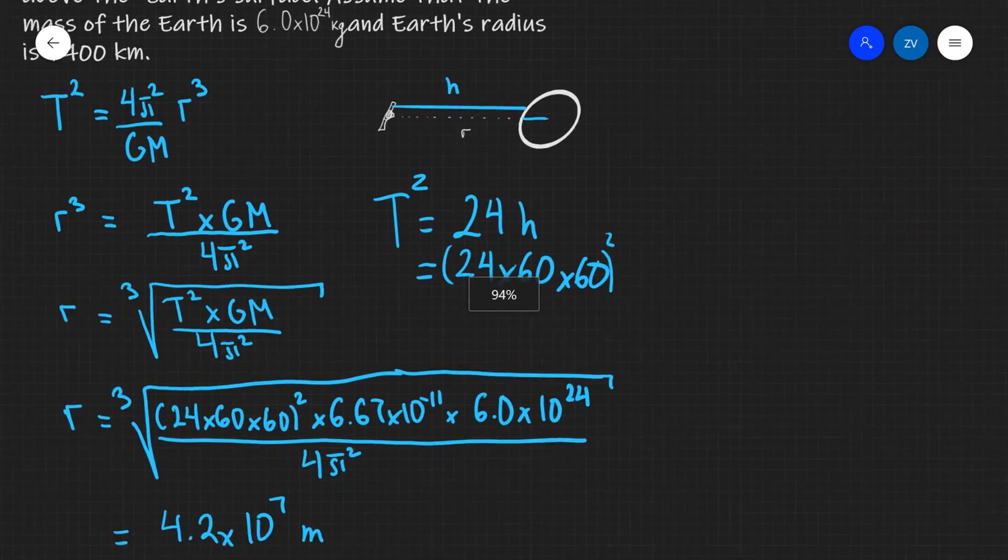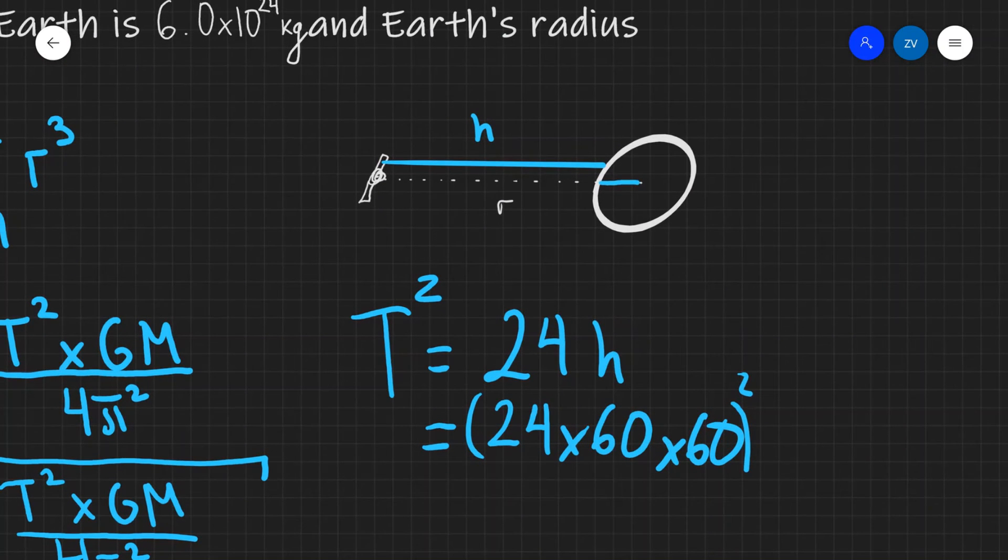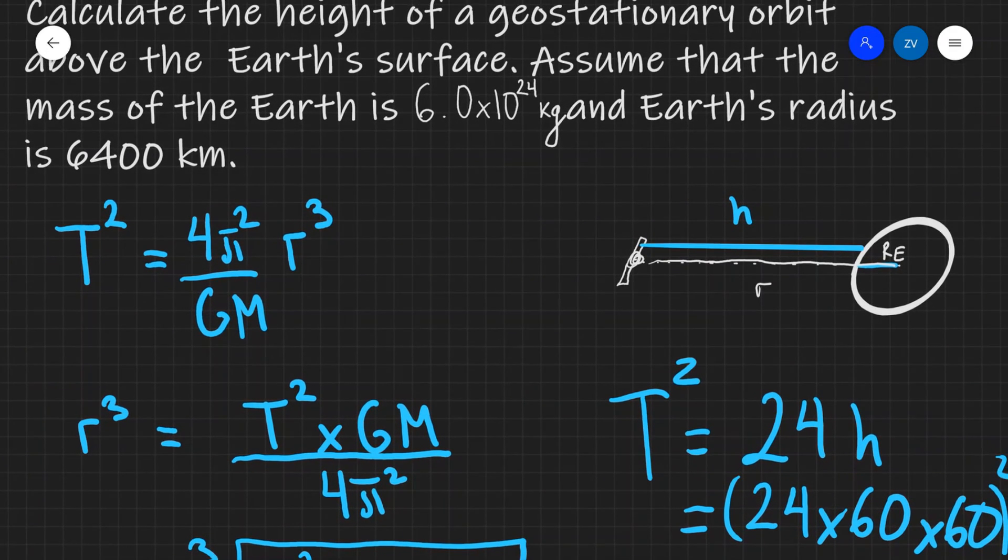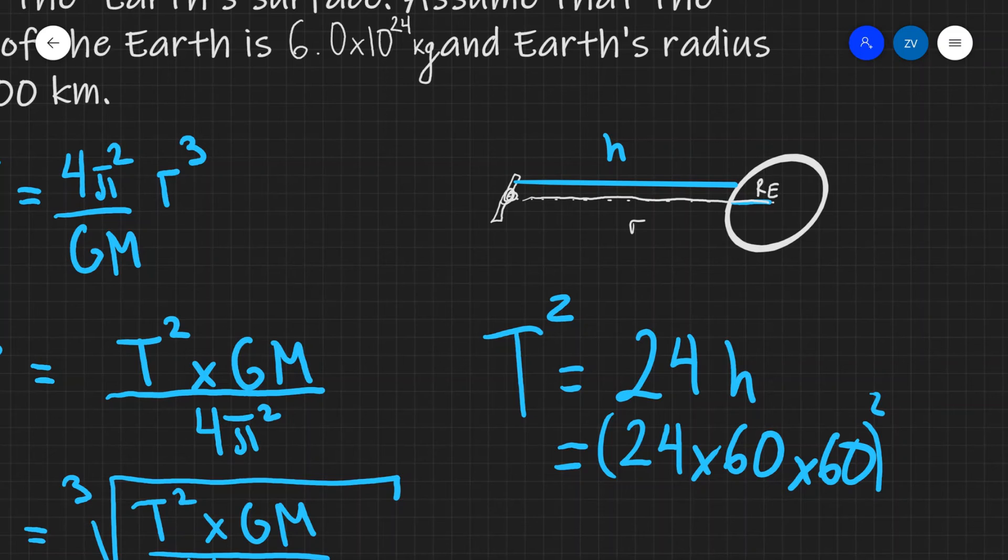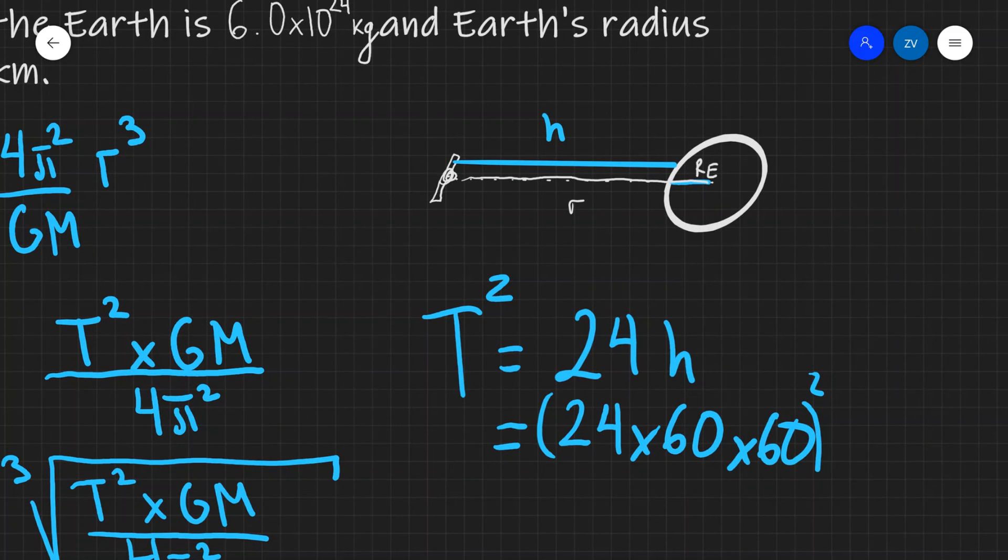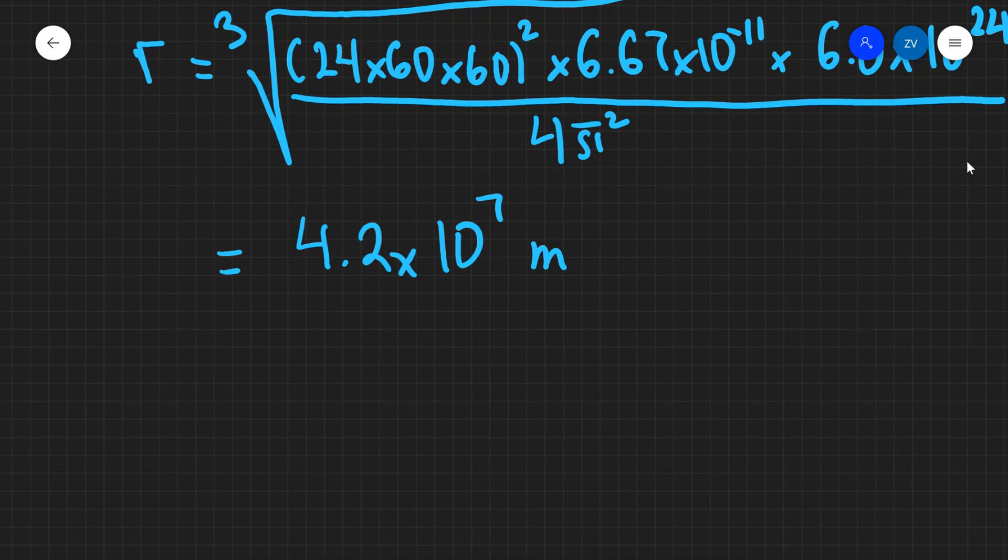Now this over here is our distance r. However, remember our height h is actually going to be found by taking this whole distance r and taking away. So r is essentially from here all the way to there. I'm going to take away the radius of the Earth, which is 6,400 kilometers.